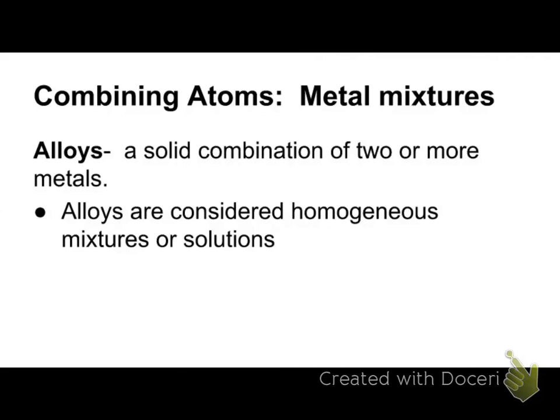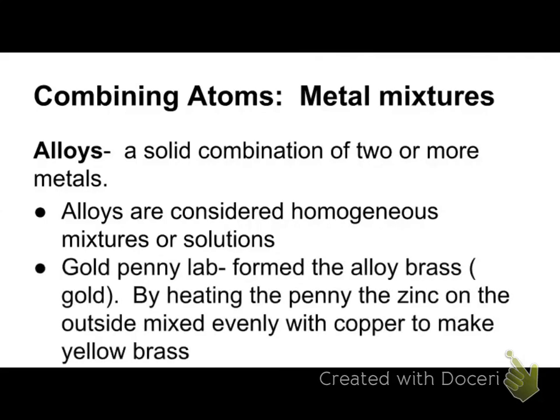We're not going to give those percentages here — just show the mixtures. On the test, if you have to say how brass is made, you could say: take a penny, coat it with zinc, heat it up in a flame, and it will cause zinc and copper to mix evenly to produce brass.